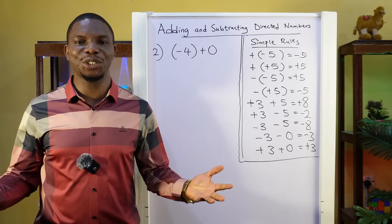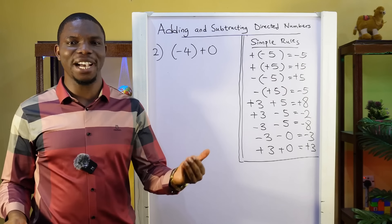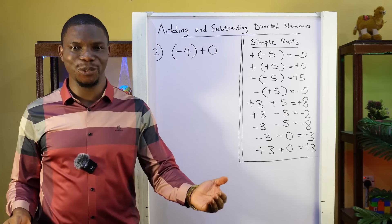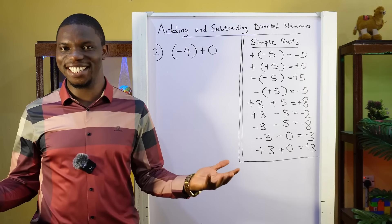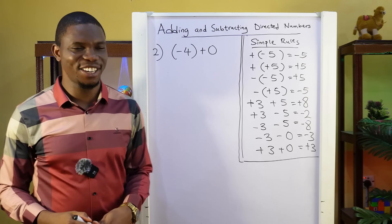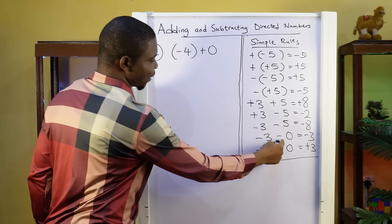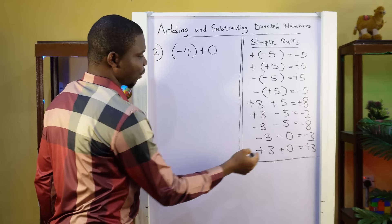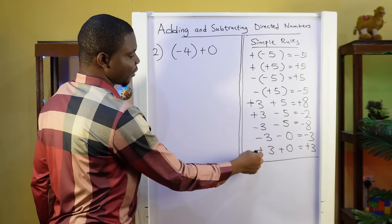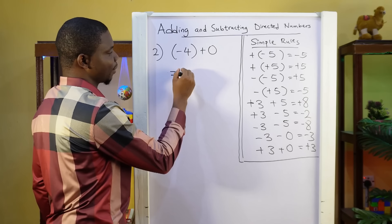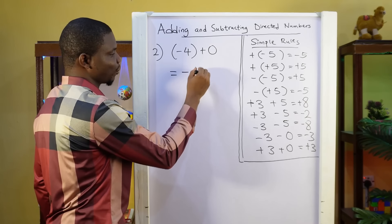Question 2: minus 4 plus 0. Easy, right? Remember, when you are subtracting or adding 0, the number remains the same. So this is going to be minus 4.